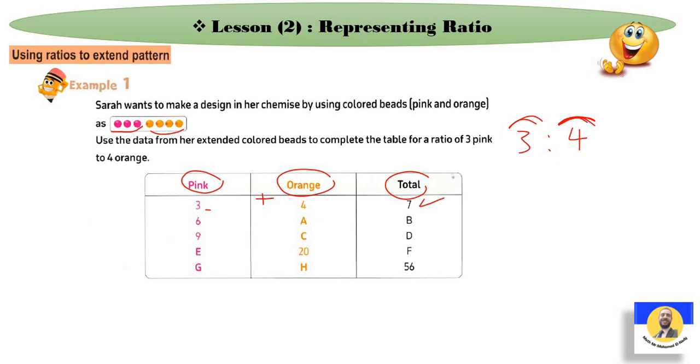Now we have missing numbers. If 3 becomes 6, what does 4 become? How did 3 become 6? We multiplied by 2. So we do the same here: 4 times 2 equals 8. And for B, we also multiply by 2: 7 times 2 equals 14. We can check: 6 plus 8 equals 14.